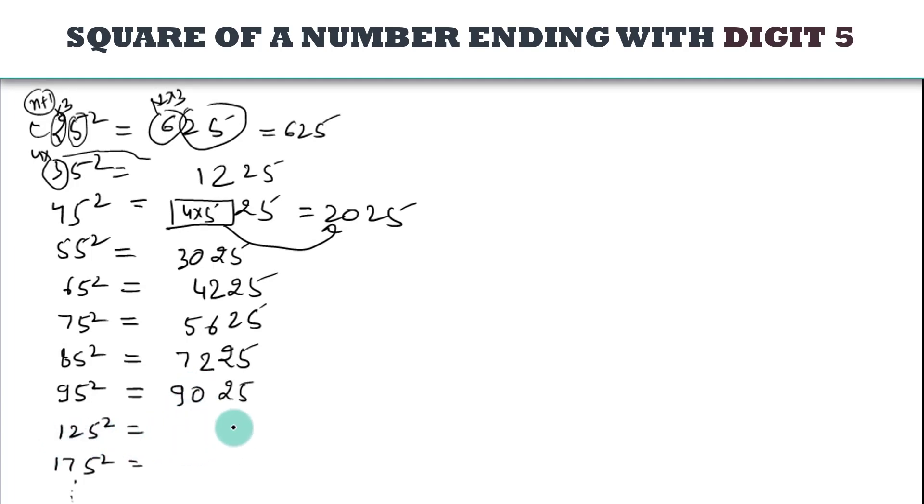Similarly, 125 square how much? 25, 12 plus 1, how much? 12 into 12 plus 1 is 13, 12 into 13 how much? 156, 15625.